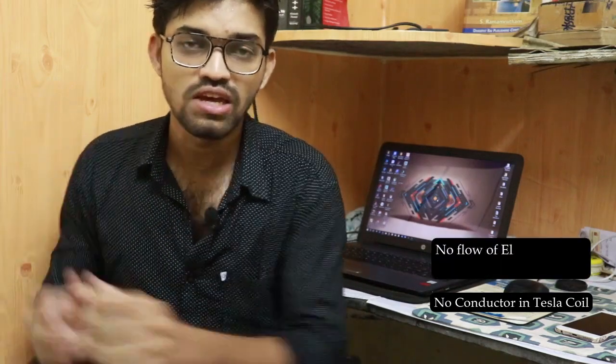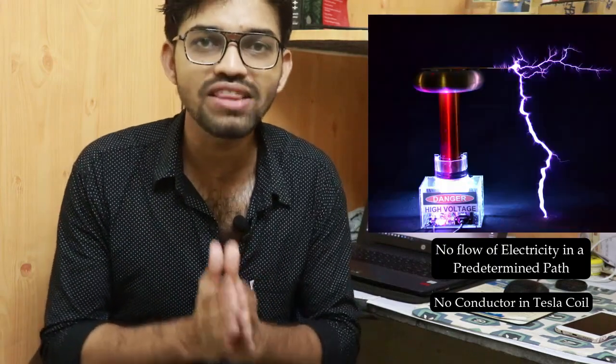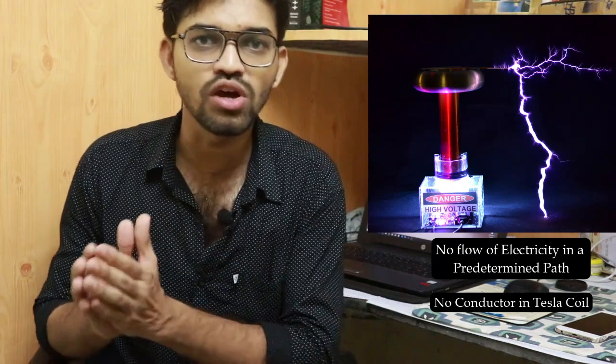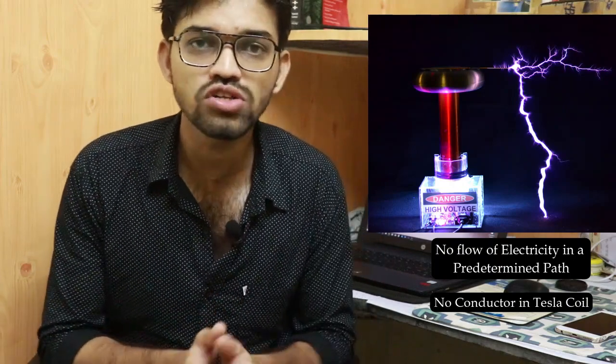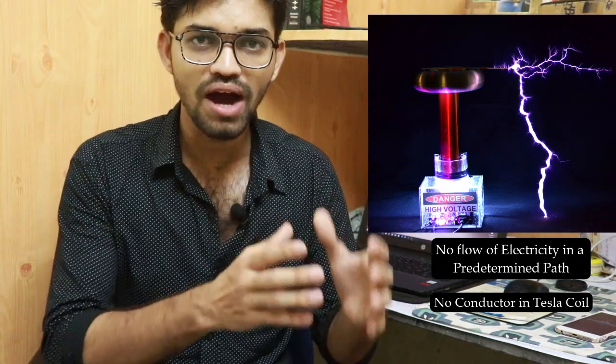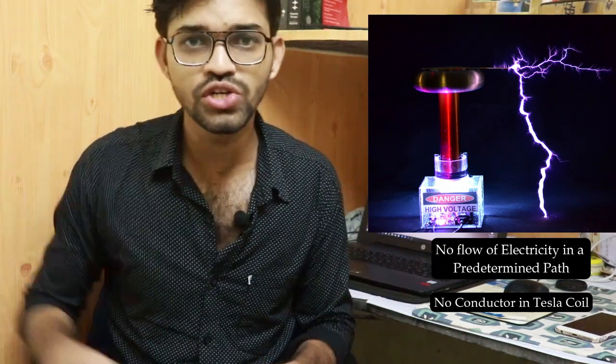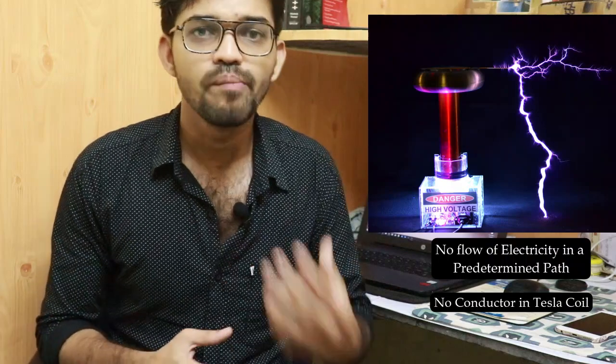However, there are significant drawbacks to the Tesla coil. The main problem is that there is no fixed path for the flow of electricity. When electricity flows through a conductor it follows a predetermined path, but in the Tesla coil there is no fixed path for electrons to travel from one position to another. This lack of a controlled path means the electricity can cause more damage, as it cannot be directed reliably from one location to another.